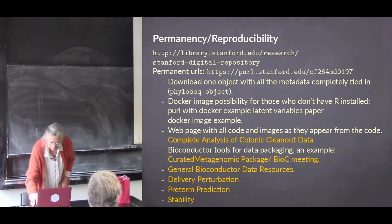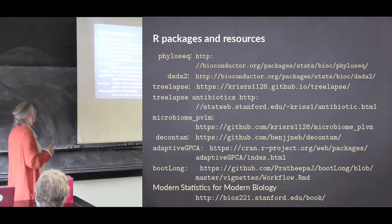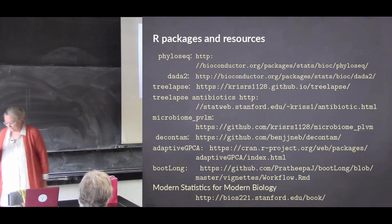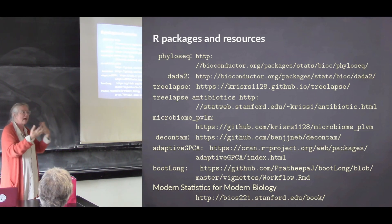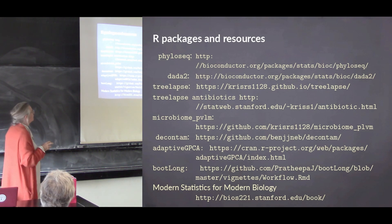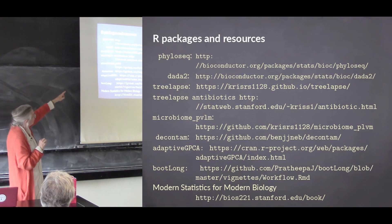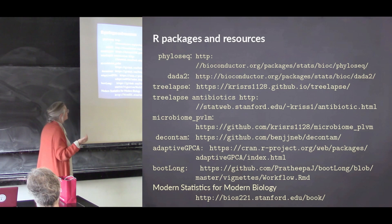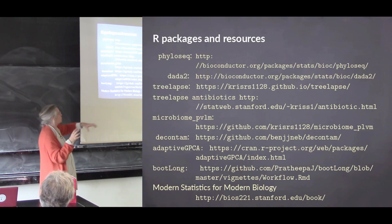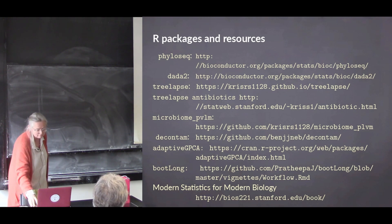Let's do what we can, show good faith, be transparent, and move on. Here are some of the resources we've developed: I talked about HYDRA for heterogeneous data; PhyloSeq is one of the earlier programs; DADA2 is an interactive program that lets you denoise the data and also see the error; TreeLapse lets you look at trees and longitudinal data; the Latent Variable program is microbiome PVLM, available as a Docker container; and Adaptive gPCA allows you to modulate a tree, plus bootLong for bootstrapping. The book I wrote is freely available online.